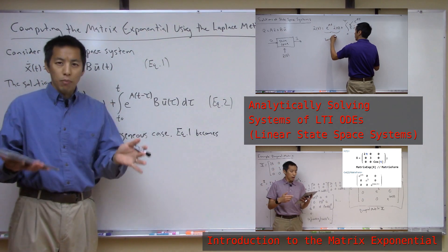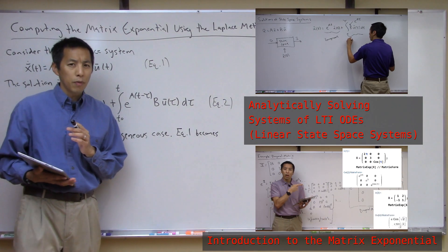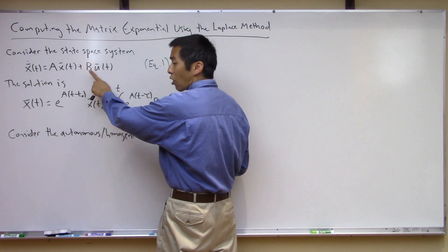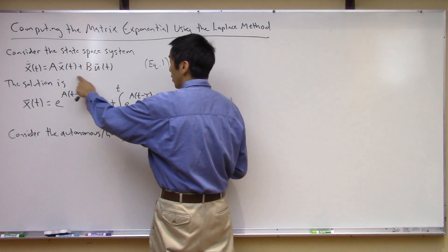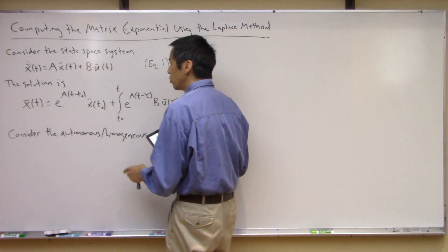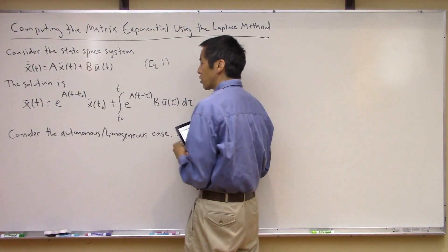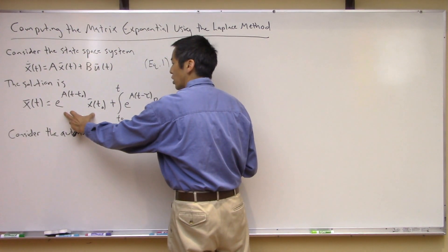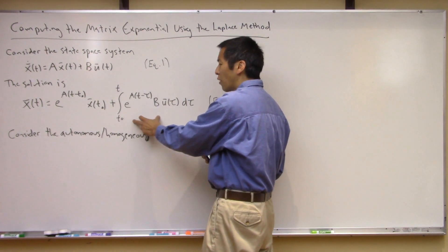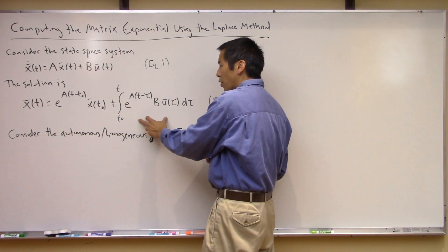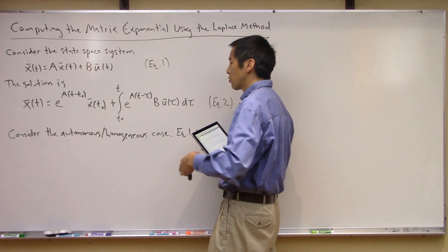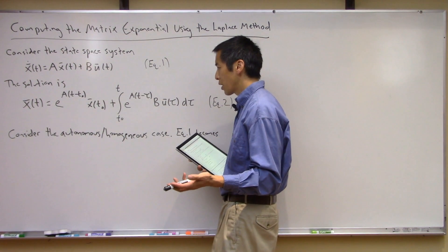To jump right into it, let's just refresh what we talked about in some of our previous discussions. Our linear time-invariant state-space representation looks like x-dot equals Ax plus Bu. We showed earlier that the analytical solution involves the matrix exponential and the initial condition, as well as the particular or convolution integral. You basically have the homogeneous and non-homogeneous response — this is your analytical solution.